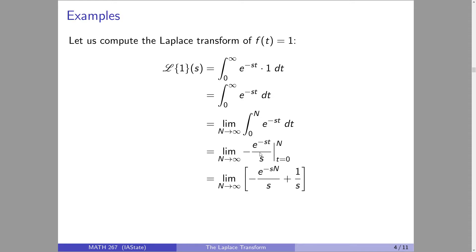Plugging in t equals 0 eliminates that e term, and the minus became a plus. Now we take the limit as N goes to infinity. I see e to a negative times N getting really big, so it'll get really small - but it depends on s. In order for this to go to zero, I need s to be strictly bigger than zero. So we've computed our first Laplace transform: the constant function one Laplace transforms to one over s, valid when s is greater than zero.